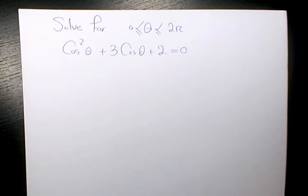Which is cosine squared theta plus 3 cosine theta plus 2 equals to 0. And the theta must be between 0 and 2π.